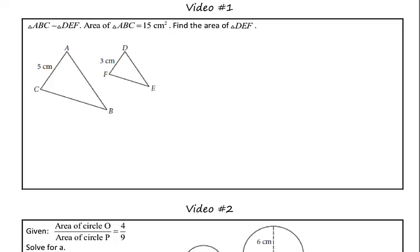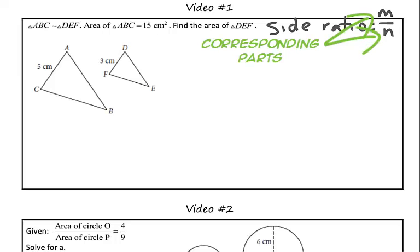To review that, we learned that the side ratio, or the ratio of the sides of similar polygons, we're going to call M over N. So just picking a pair of your corresponding sides and writing a ratio.